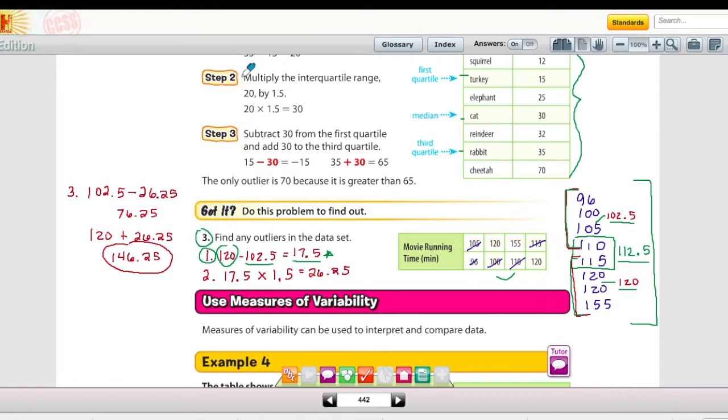The interquartile range is 17.5. Then looking up here, it says step two, multiply that interquartile range by 1.5. So 17.5 times 1.5 is 26.25.